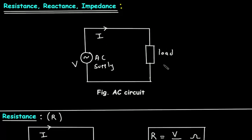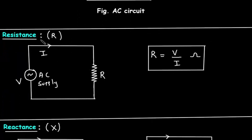The load will be either a resistor, inductor, or capacitor, or a combination of resistor and inductor, resistor and capacitor, or resistor, inductor and capacitor. If the load is only a resistor, then R is equal to V by I, where R is the resistance in Ohms, V is the supply voltage, and I is the current.